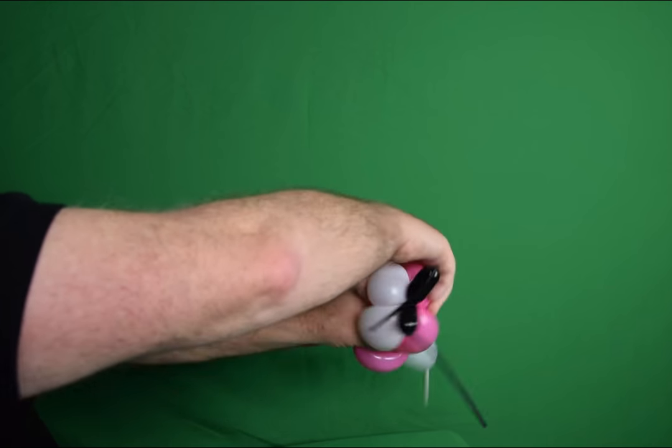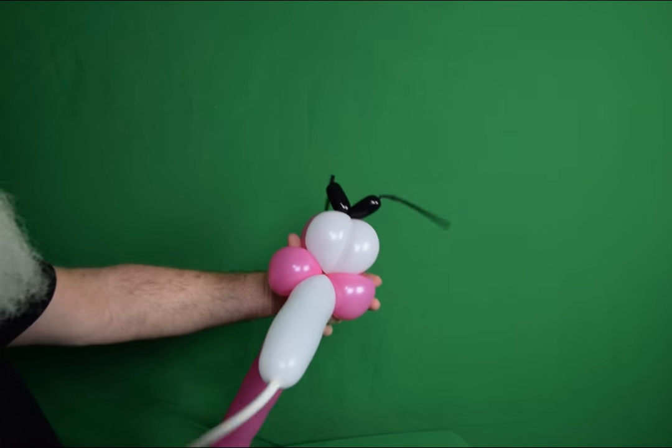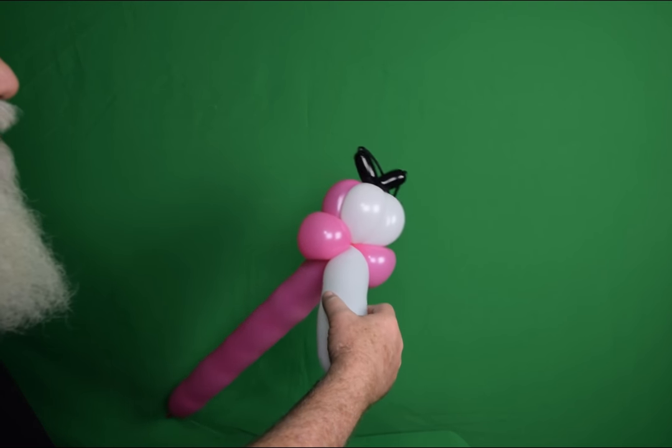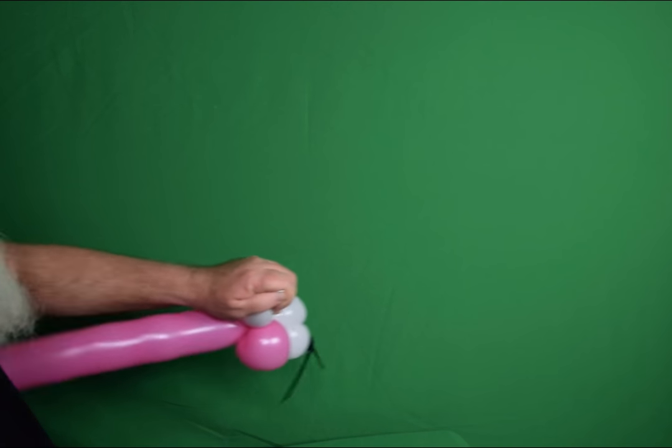And then a lot of times what I'll do is I'll take these bubbles on top and just spin them around and that helps make sure that they're pulled in really tight and snug there in the middle of those fold twists.